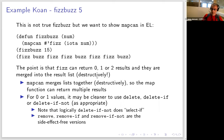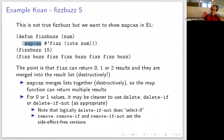We want to use mapcan to collect the fizz results, since the fizz function can return zero, one, or two values as a list. Mapcan calls fizz on my list of integers and splices all the returned lists together using nconc — destructive splicing. This gives us a flat list of all fizz and buzz symbols encountered.